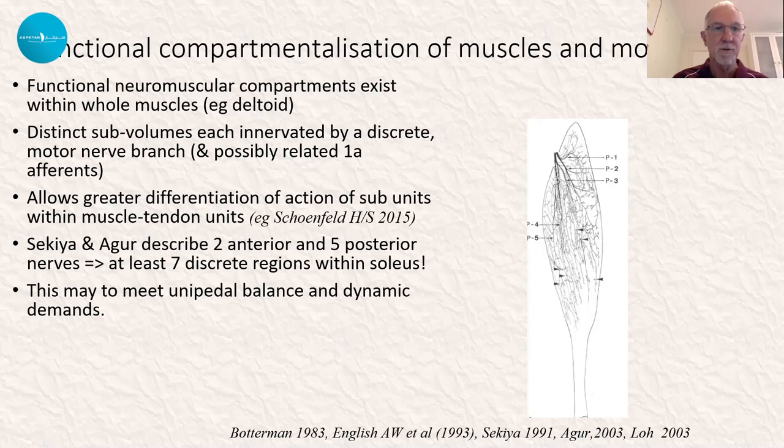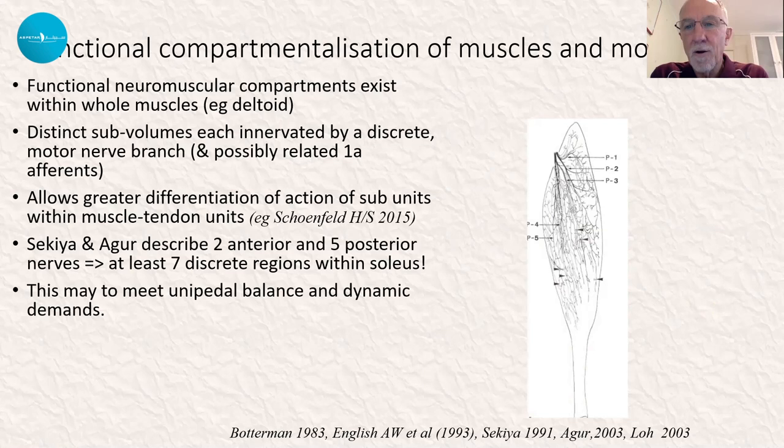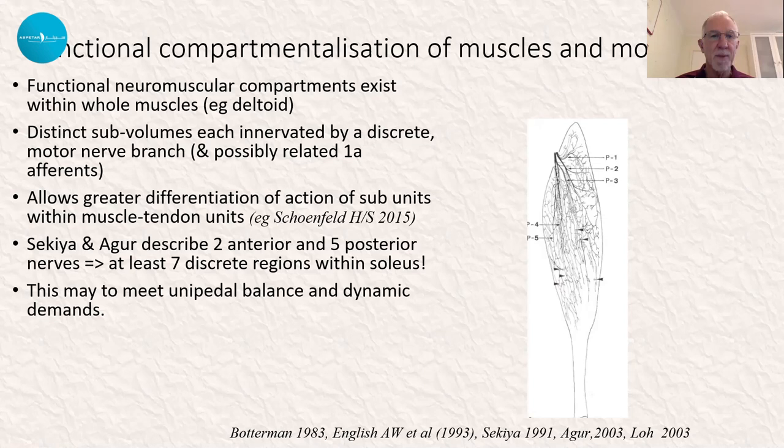If we look at soleus through this lens, we need to appreciate that there are seven discrete regions of nerve supply within the soleus muscle — effectively seven different sub-compartments. It appears that they've probably developed more to meet unipedal balance and dynamic demands.